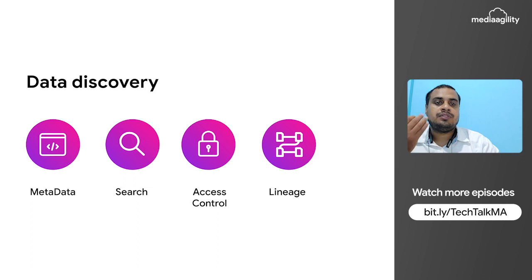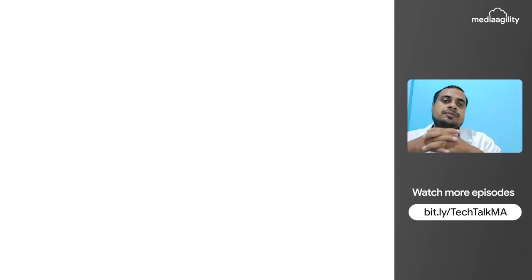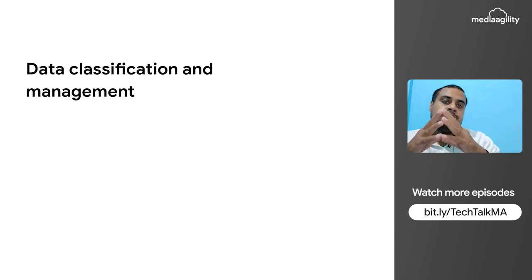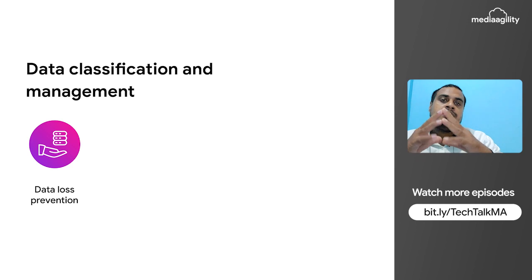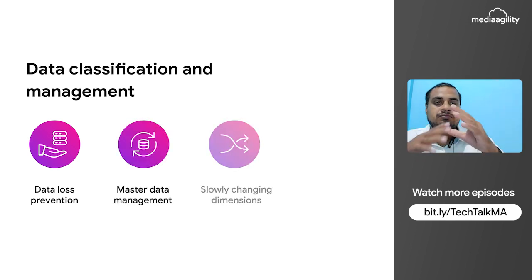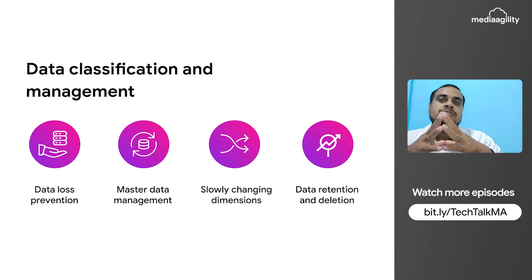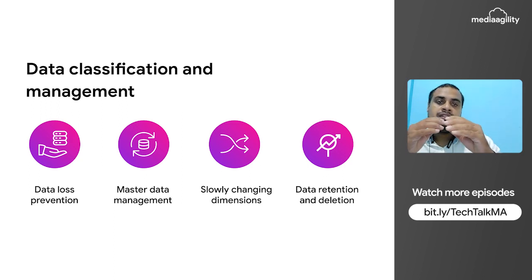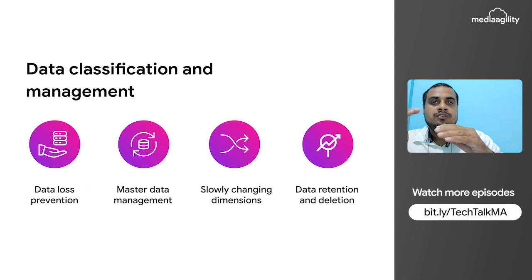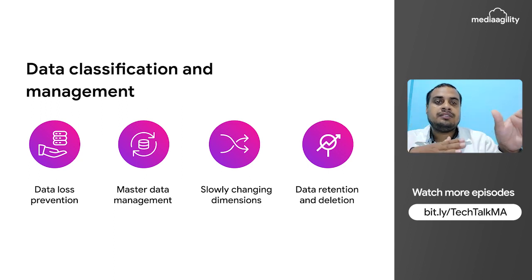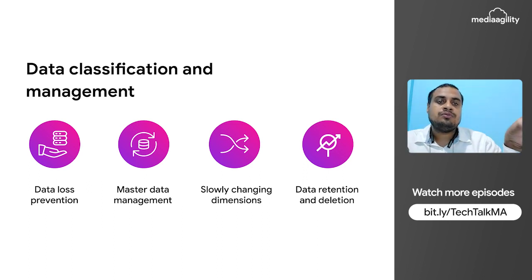The next part is data classification and management. In this step we do data loss prevention (DLP), master data management, SCD (slowly changing dimensions), data retention and deletion. In data loss prevention, we identify PII data or any data subject to policy. Basically, the DLP API will automatically scan the data, and based on whether any data matches PII or any other policy, it will mask that data.